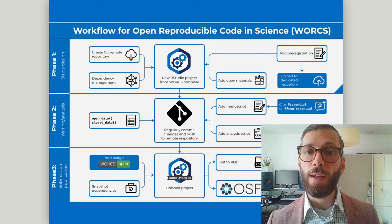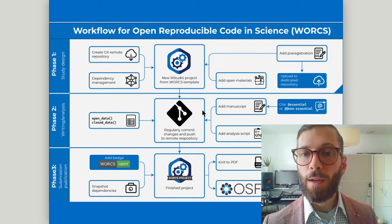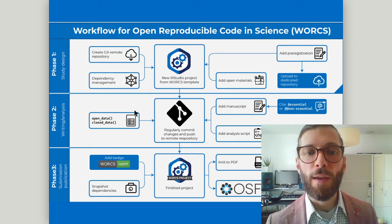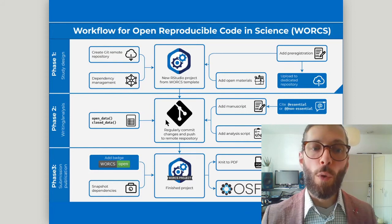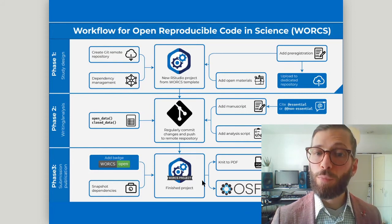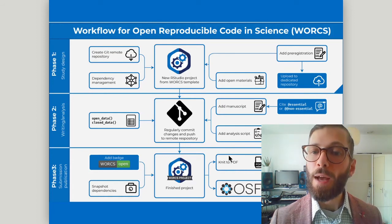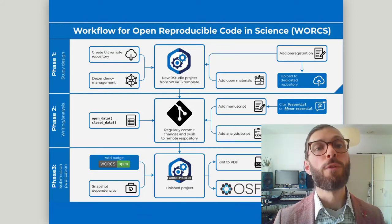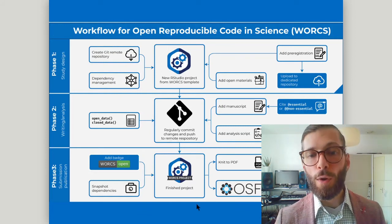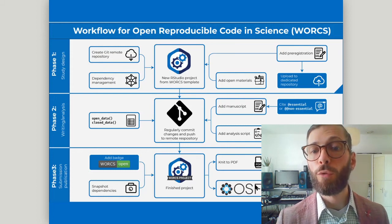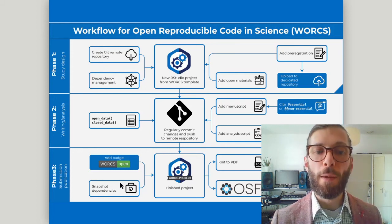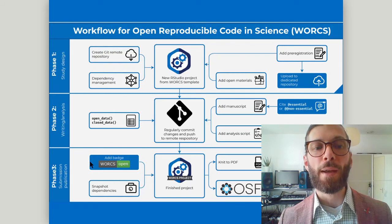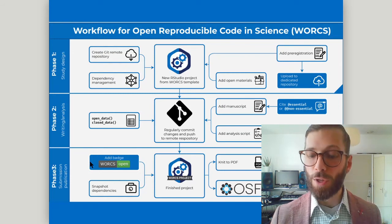As you start writing and analyzing, you add a manuscript which is updated several times, and maybe you add separate analysis scripts and open data or closed data. Until you are nearly done with your manuscript, you have a finished project. You then knit the project to a PDF which you can submit to a journal, and hopefully also publish as a pre-print, for example on SciArchive. You can connect this project through GitHub to the Open Science Framework, snapshot your dependencies so that it will be fully reproducible, and even get a WORKS badge which rewards you for embracing open science principles.